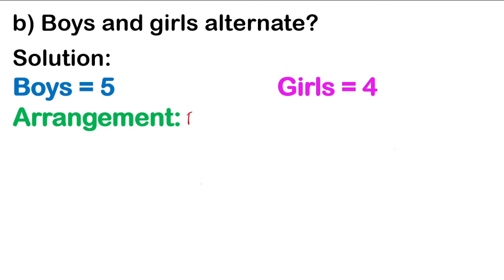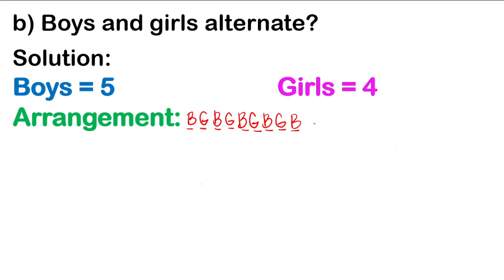Let's try boys first: boy, girl, boy, girl, boy, girl, boy, girl, boy. Counting — all 5 boys are seated, and all 4 girls are seated. Is this arrangement acceptable? Are the boys and girls alternately seated? Yes, so this is acceptable.